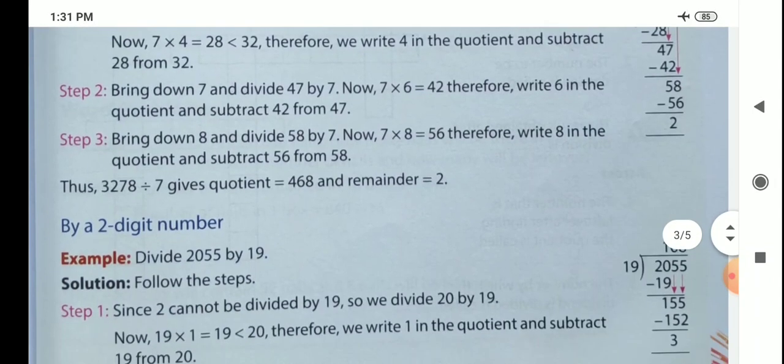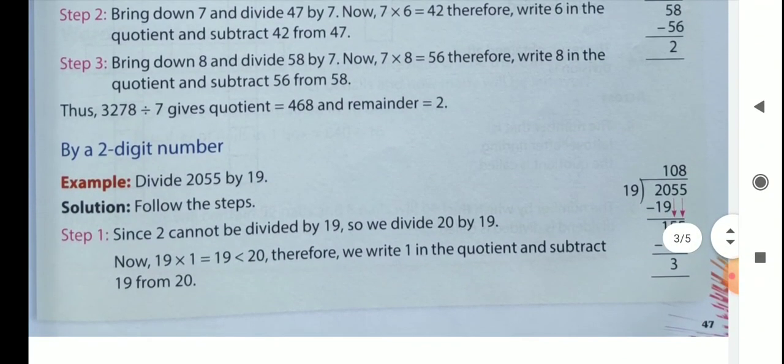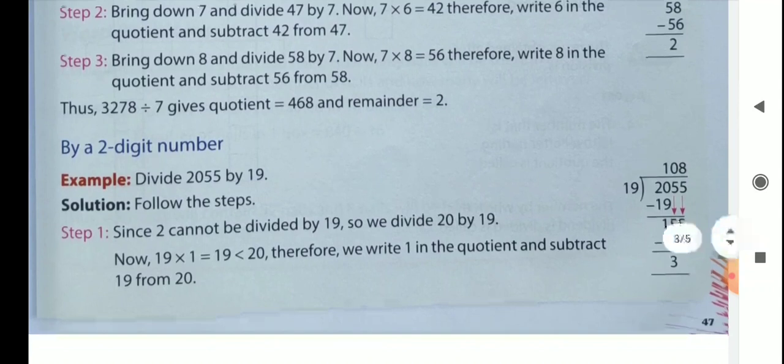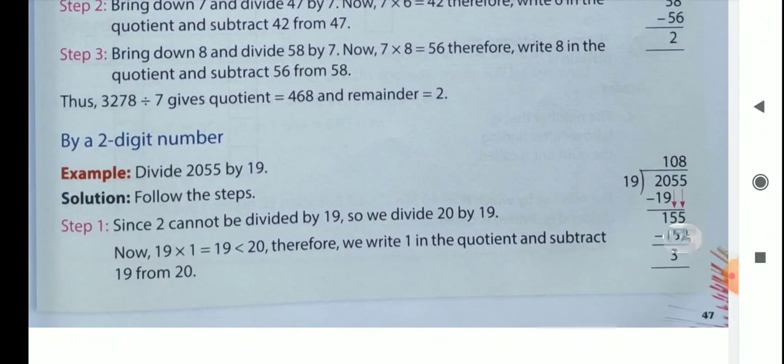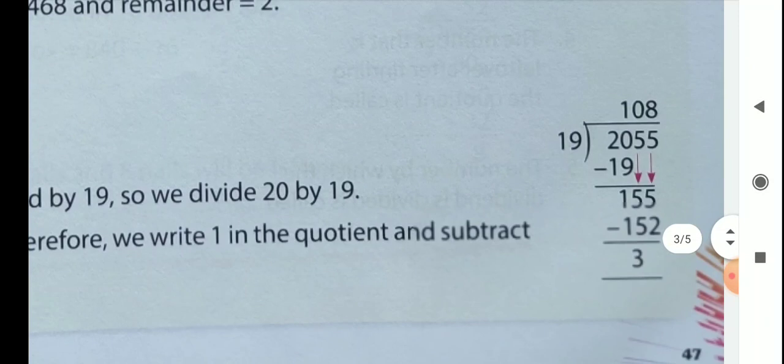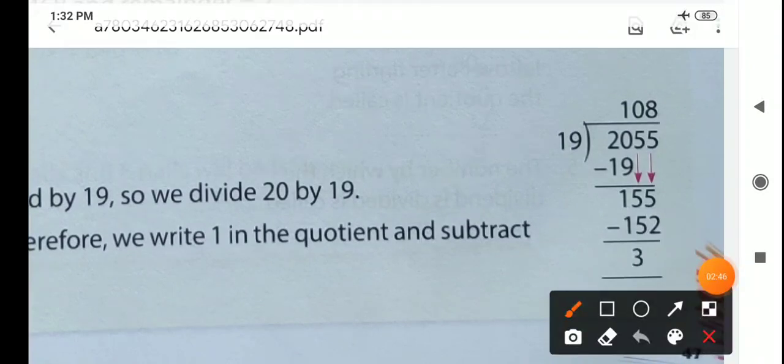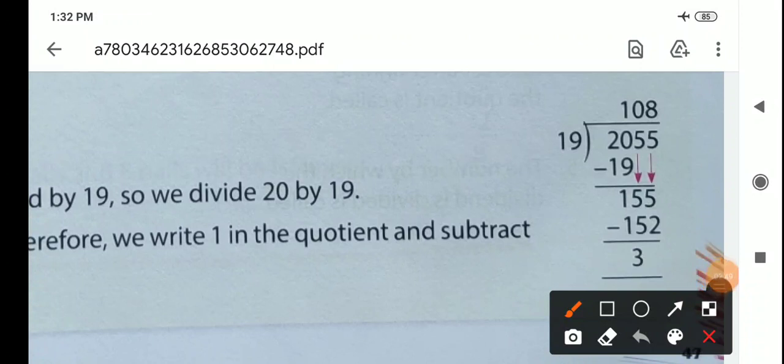Then we see 4-digit number by a 2-digit number. Here you see 2055. Here 2 is less than 19, so we take 20.